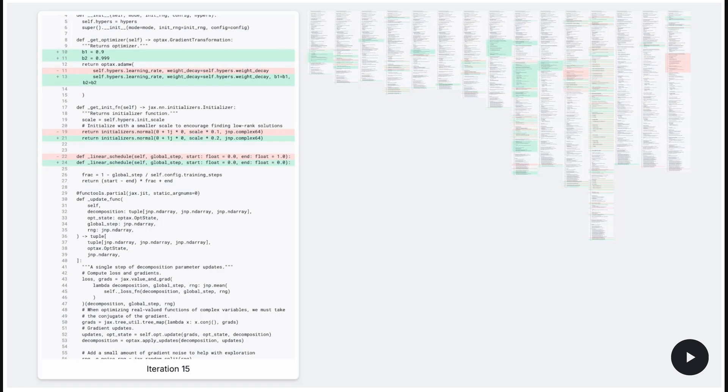To the right, there's a branching tree of smaller code snippets, visually representing the many different program variations that AlphaEvolve explores. The label iteration 15 at the bottom emphasizes that this is an iterative refinement process, where each iteration tries to improve upon the previous ones, searching for a better algorithmic solution.